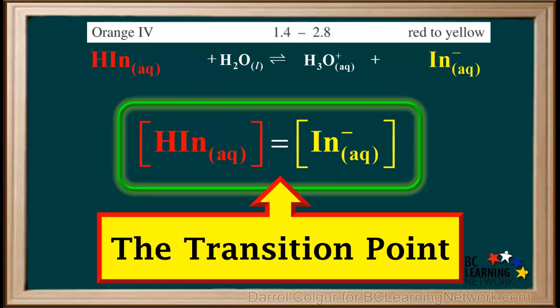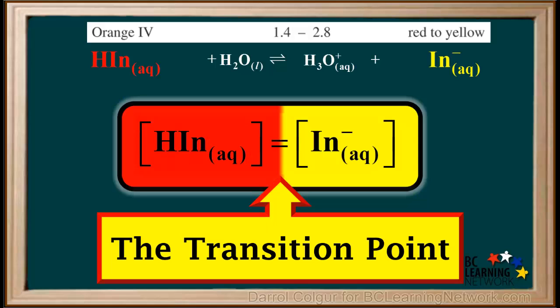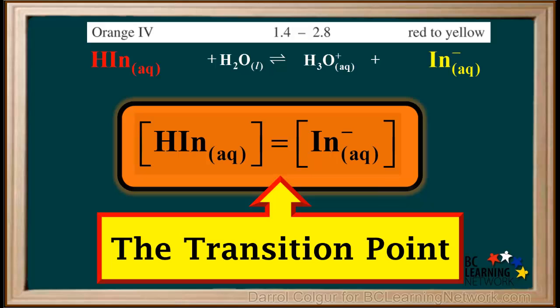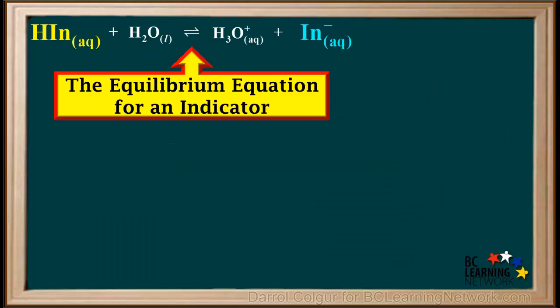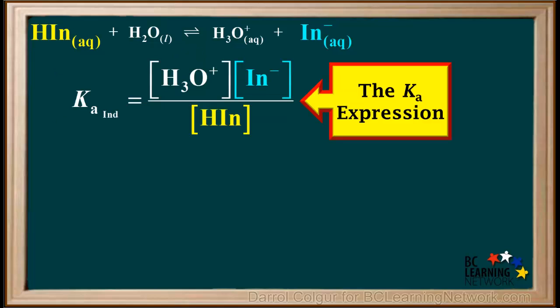So the color at the transition point will be green. In a different indicator, Orange 4, HIn is red and In⁻ is yellow. So at the transition point of Orange 4, the color will be the result of a 50-50 mixture of red and yellow, which is orange. Now we'll go back and consider the equilibrium equation for an indicator. Using the equation, we can write the Ka expression for this indicator: Ka equals the concentration of H₃O⁺ times the concentration of In⁻ over the concentration of HIn.